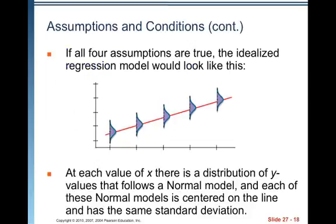If all four assumptions are true or can be made, the idealized regression model would look like this. You'd have a line and the errors about that line would be distributed normally. At each value of X, there is a distribution of Y values that follows a normal model. And each of these normal models is centered on the line and has the same standard deviation.